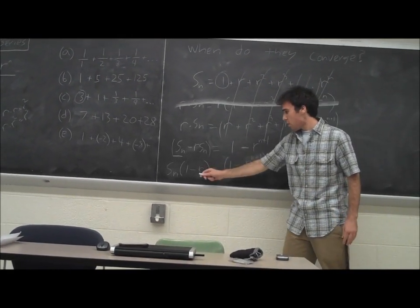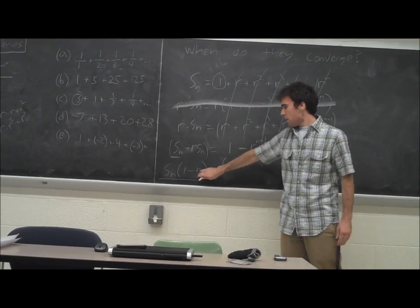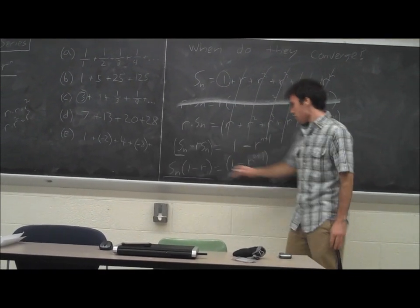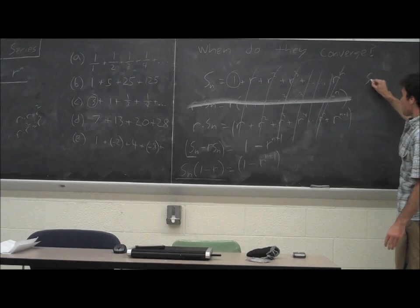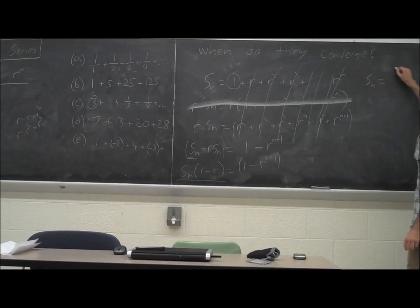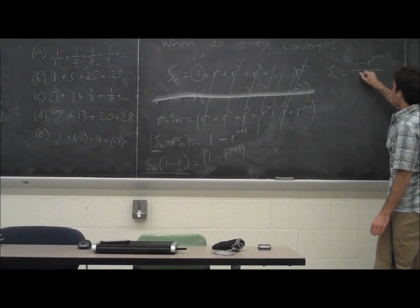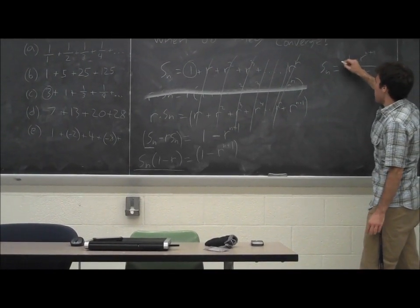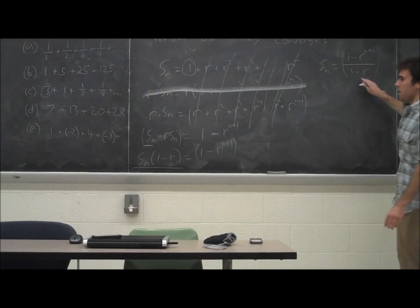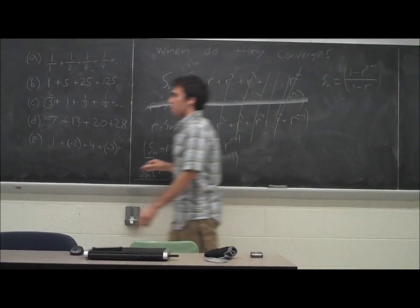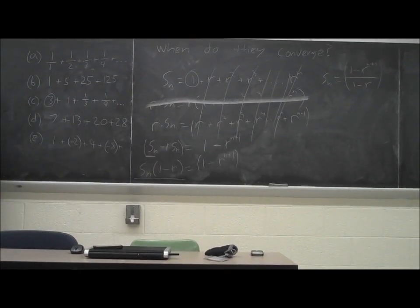So to get the sum by itself, all we need to do is divide by this common factor. So we have now shown why the sum is equal to 1 minus R to the n plus 1 over 1 minus R. But, aha, right? We're not quite done yet. This is a little different than what we had over here.